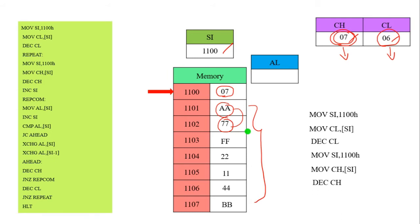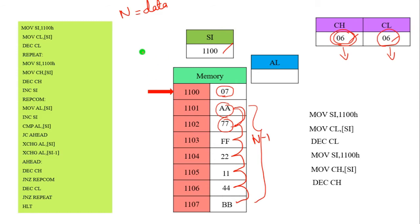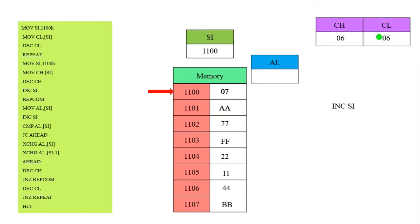The necessity step is the decrement of CH. Why are we going to decrement CL and CH? We are going to take N data. For example, this AA — we compare it first time, second time, third time, four, five, six. This comparison operation takes place N-1 times. That's why we decrement the CH and CL register values. The next necessity step is increment of the SI, so the pointer value becomes 1101.